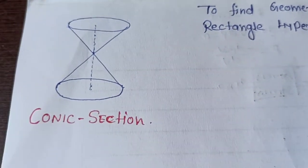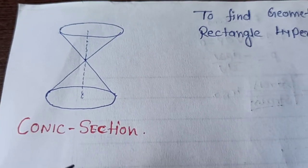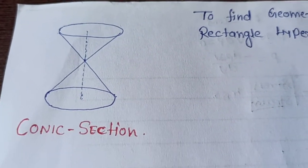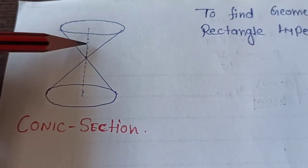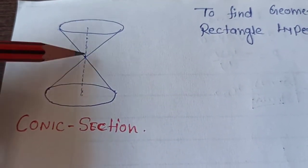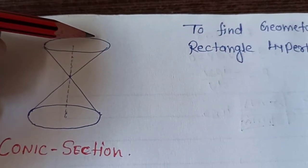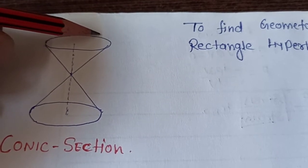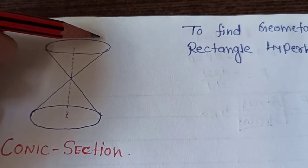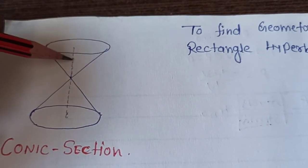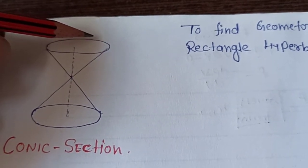First of all, you can see the geometry of the conic section. We can find and take out a hyperbola. You can see that this is the axis of the conic section. If we want the hyperbola, we will cut it with the help of a plane, and the direction of the plane is parallel to the direction of this axis of the conic section.